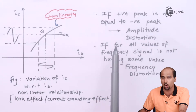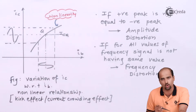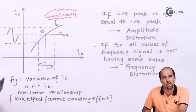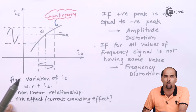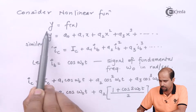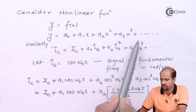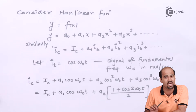When talking about only amplitude distortion and frequency distortion, the graph shows distortion in terms of the IC and IB non-linear relationship, called non-linear distortion. That occurs in Class A and Class B power amplifiers. Let us consider that Y is a function of X, which can be represented mathematically. I can write Y in terms of polynomials when talking about non-linearity, forming the non-linear expression relating IC and IB.